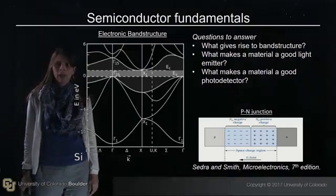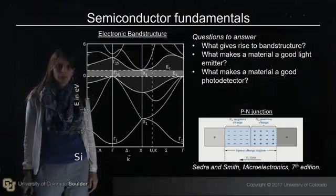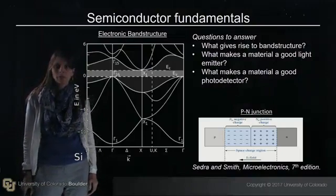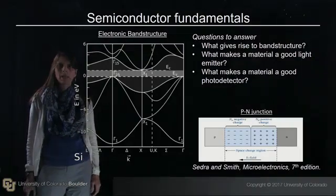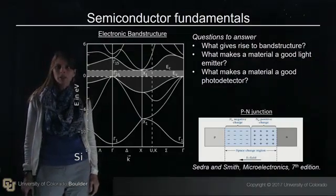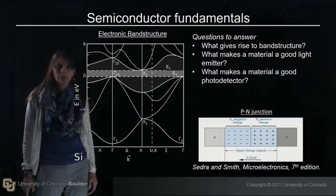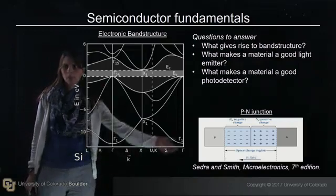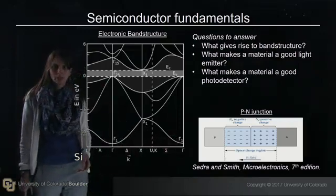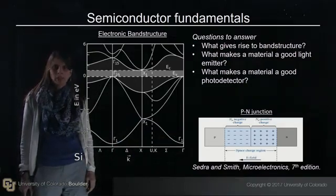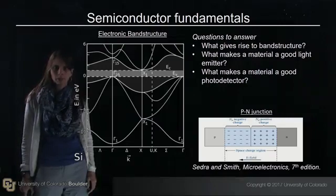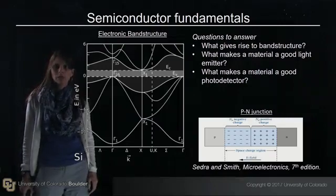I'd like to tell you about active optical devices. These are semiconductor materials that both emit and detect light. An understanding of the fundamentals of semiconductor physics is critical in order to understand light emission and detection. Here you're looking at the typical band structure for a semiconductor, in particular silicon. Semiconductors sometimes behave like insulators, and sometimes they behave like conductors, and we can actually modulate this behavior, which is what makes them such a powerful tool.